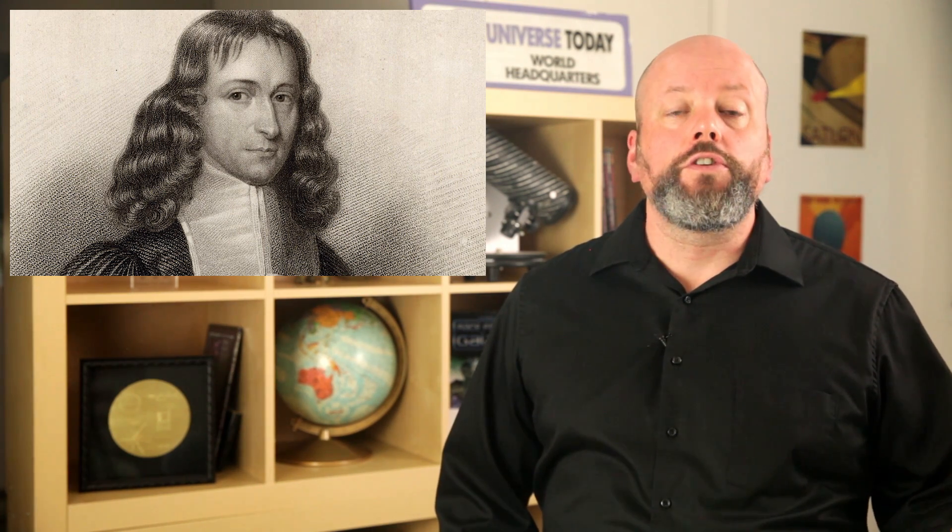We knew how far away everything is in proportion to everything else, but not in absolute terms. In 1663, the Scottish mathematician James Gregory calculated that by making very precise measurements of the transits of Venus or Mercury, you could use trigonometry to figure out the actual distance from the Earth to the Sun. The famed astronomer Edmund Halley did even more detailed calculations and suggested places on the Earth to make measurements from.